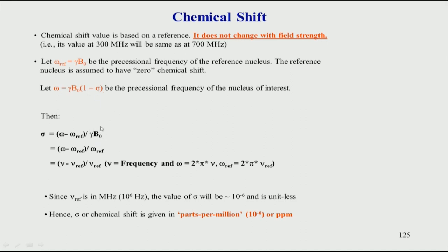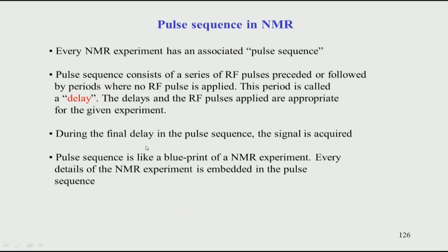In another magnetic field, it will be 600 megahertz or 700 megahertz accordingly. But because the frequencies are scaled according to the chemical shift, omega depends on B0, and the B0 effects cancel out — so the chemical shift essentially becomes independent of the magnetic field. This is also what we saw in the previous class.